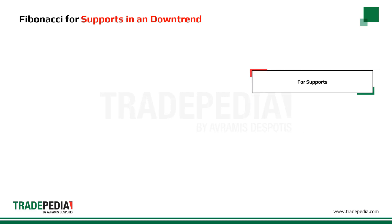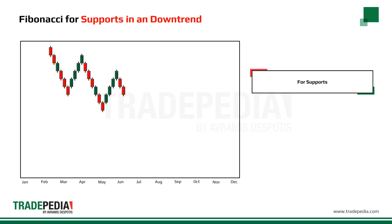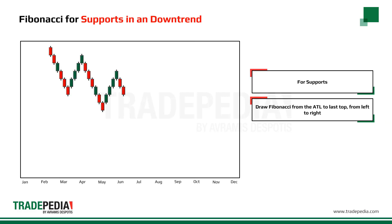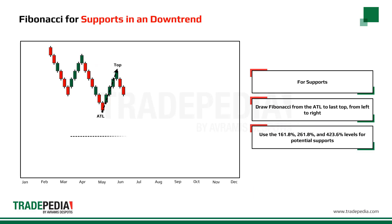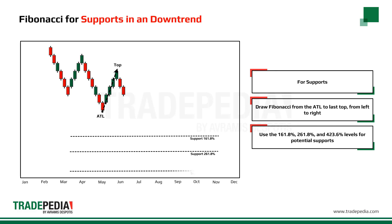For supports in a downtrend, draw Fibonacci from the all-time low to the last top, always from left to right. Use the 161.8%, 261.8%, and 423.6% levels for potential supports.